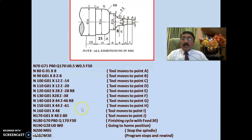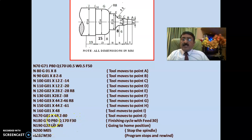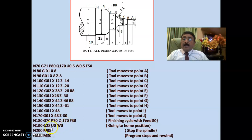After rough turning, G70 is the finish turning cycle. You simply write G70 P80 Q170 F30 — between block numbers N80 and N170, the finishing pass is performed at a feed of 30 mm/min, removing only the 0.5 mm allowances on X and Z. Then the tool is sent back to home position, M05 stops the spindle, and M30 ends the program and resets to the initial position.